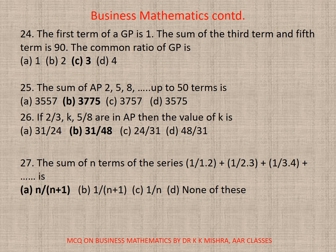Question 24. The first term of GP is 1. The sum of the third term and fifth term is 90. The common ratio of GP is, the correct option is C, 3.